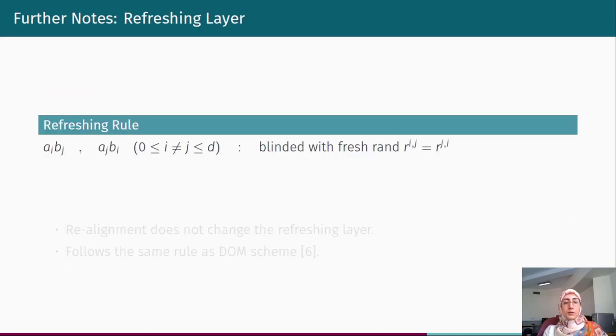There are some further notes that we would like to discuss about our design. First is about the used refreshing layer. Our design follows the same refreshing rule as the DOM scheme presents. According to this rule, all aibj component functions where i is not equal to j are blinded with fresh random bits. In fact, the realignment does not change the refreshing layer. And our design requires the same number of fresh random bits as the original DOM scheme.